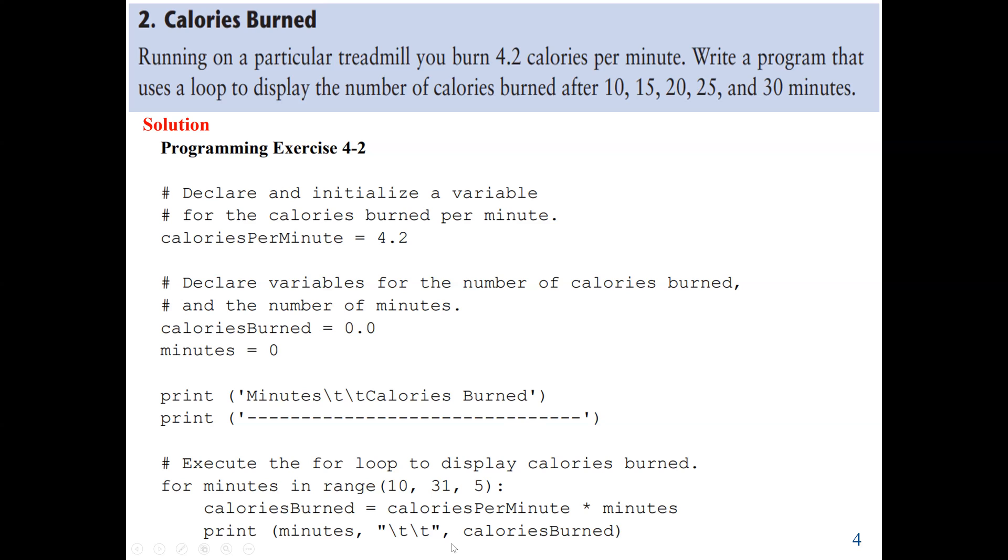So now we have the formula given to us. The calorie burned is equal to the calorie per minute times the minutes. Because we know it's 4.2 per minute. So if it's 10, then it will be 4.2 times 10. And then the next step will be 15, then it will be 4.2 times 15. Every time, the loop range, we are adding 5 minutes to the value until we reach 30.